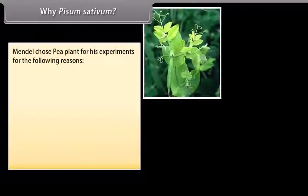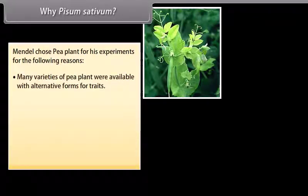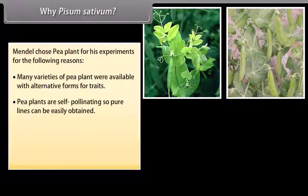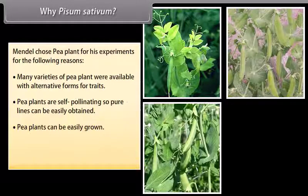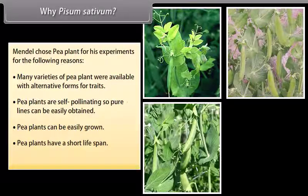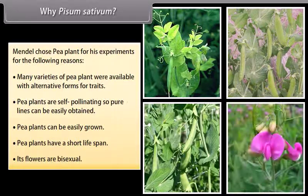Why Pisum sativum? Mendel chose pea plant for his experiment for the following reasons. Many varieties of pea plant were available with alternative forms for traits. Pea plants are self-pollinating, so pure lines can be easily obtained. Pea plants can be easily grown. Pea plants have a short life span. Its flowers are bisexual.